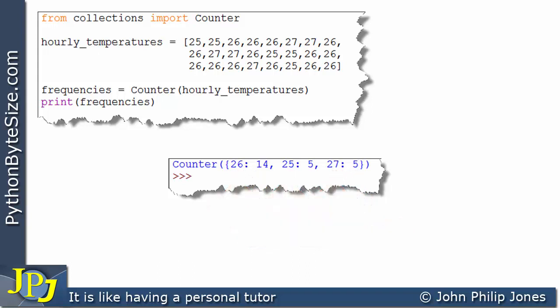Now the finding of all of those frequencies for the various temperatures that appeared in the list was done on one line, which is this line here, and there's not an iteration in sight. So we can see we have a very simple way of looking at a list and finding out how often the items of that list appear. For the temperature of 26 it appears 14 times for example.